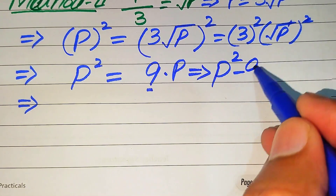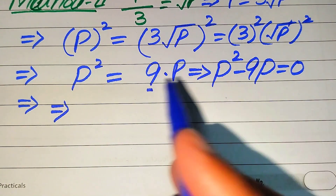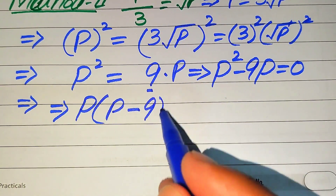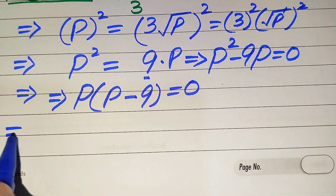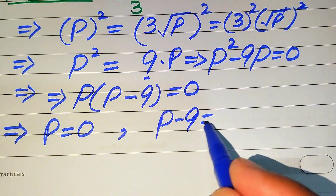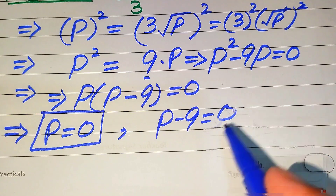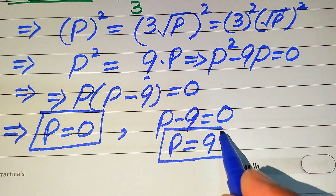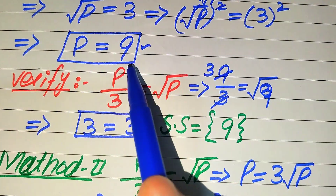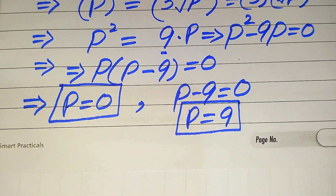Moving 9p to the left hand side gives p squared minus 9p equals 0. Both terms involve p, so we take p as common: p times (p minus 9) equals 0. This splits into two cases: the first case gives p equals 0, and the second case gives p minus 9 equals 0, so p equals 9. These are the two roots of the equation. We already verified p equals 9 in the first method.